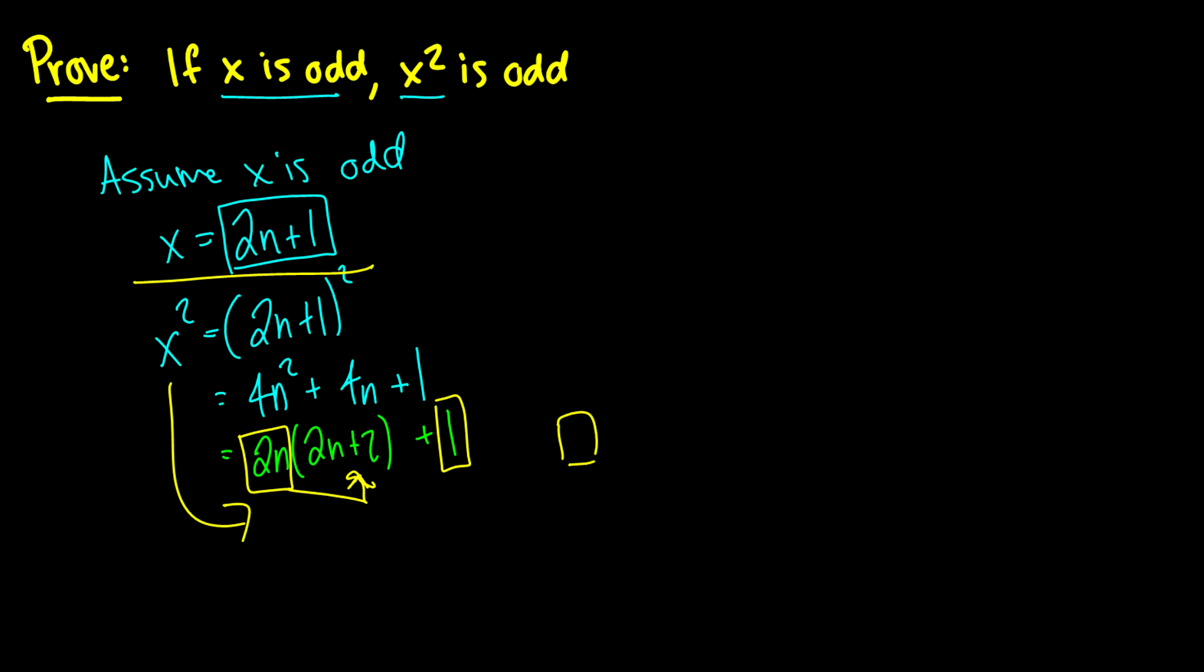So that is a direct proof. It is a direct proof because we're assuming the antecedent is true. So I will repeat this again. You assume the antecedent is true, and then you prove the conclusion or the consequent, depending on the vocabulary you wish to use. And that is a direct proof.